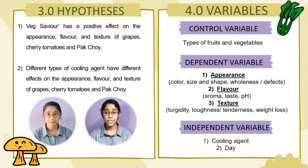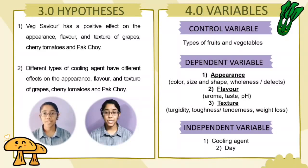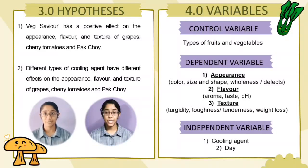The experiment has two hypotheses. The first hypothesis is that wedge saviour has a positive effect on the colour, appearance, flavour and texture of grapes, tomatoes and bok choy. The second hypothesis is that different types of cooling agents have different effects on the colour, appearance, texture and flavour of grapes, cherry tomatoes and bok choy.